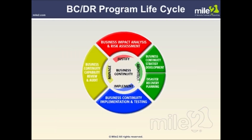The business continuity and disaster recovery program has a distinct life cycle. The illustration depicts general business continuity phases on the inside and interrelated business continuity processes on the outside. A business continuity program must be justified, which can be achieved by conducting both a business impact analysis and a risk assessment. The business continuity architecture is manifest in business continuity strategy development and disaster recovery planning. Implementation of business continuity capabilities must include training, drilling, and testing. As an integral part of business continuity management, capabilities must be reviewed, audited, and when prudent, adjusted. This is a cyclical management function which requires that the program continue to justify its investment by consistently demonstrating how it is vital to addressing business operations risk.